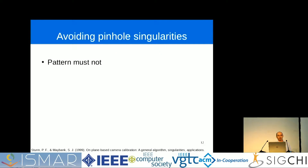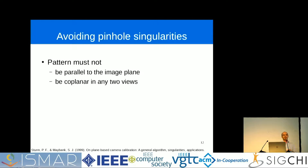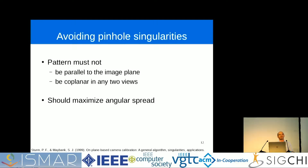To avoid this singularity, we have observed some rules. First, the pattern must not be parallel to the image plane. If we observe this rule, we have perspective shortening, which can resolve the ambiguity. Also, the pattern must not be coplanar in any two views, because it doesn't add any information; instead we should maximize the angular spread — the amount of rotation between the image plane and the target plane. I refer you to the work by Sturm and Maybank, cited in the footnote, which specifically addresses these singularities.